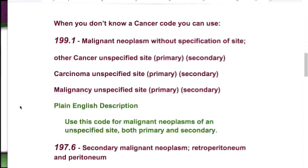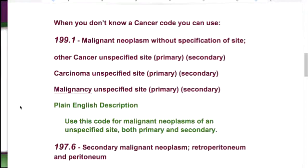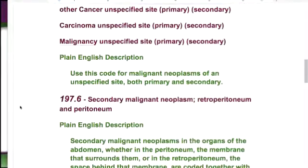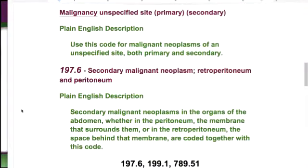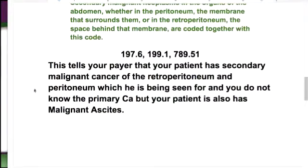197.6 is the code mentioned in the question, and it is the code for a secondary malignancy. Now, some people think that because it says 'secondary' it must be listed second — but no, it could be listed first if that's the cancer being treated. So if your patient came in for this secondary cancer, 197.6, but you don't know what the primary cancer is, then you're going to list 197.6 and 199.1, because you don't know what the first one is. You always list first the cancer that's being treated.